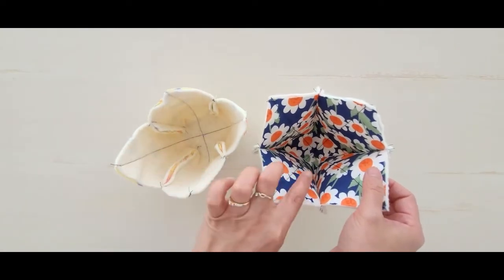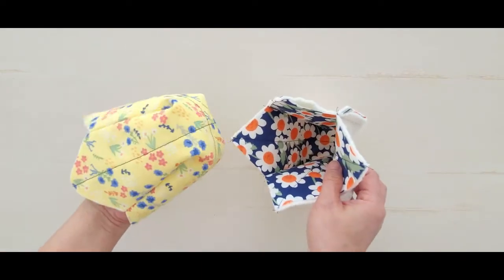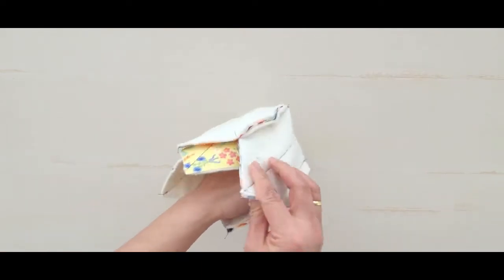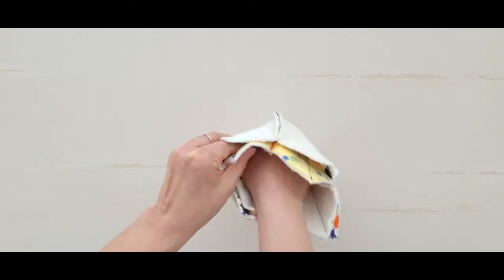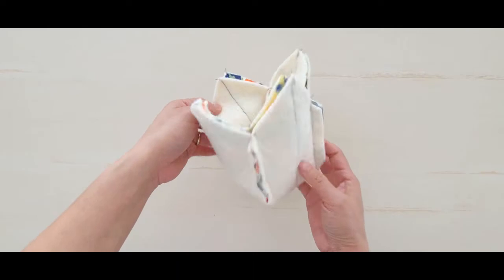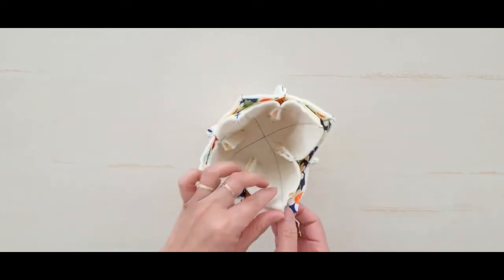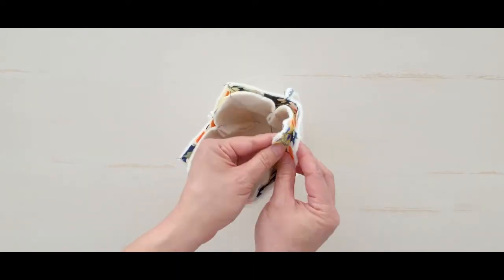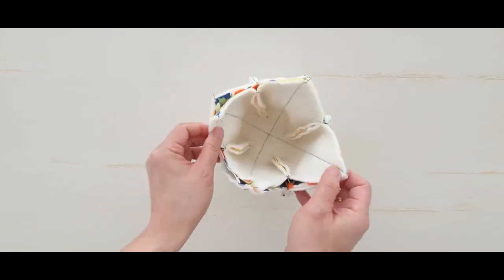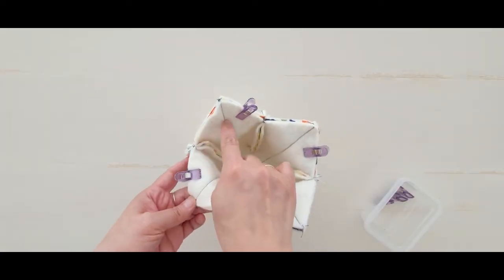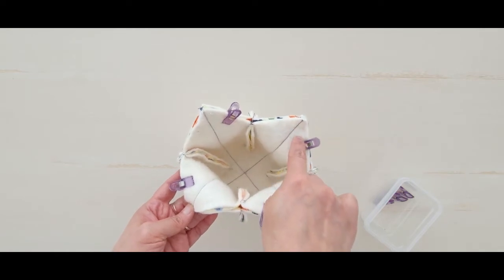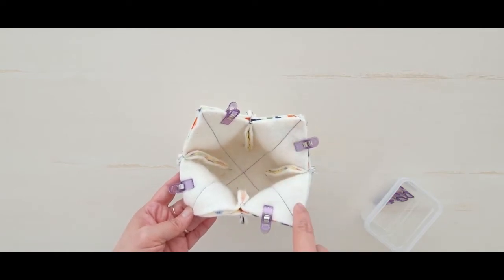Pin together both sides of ice cream cozy with the right side of both fabrics facing each other, or use quilting clips if that is easier. Sew along the edge and skip 3 inches for the opening.